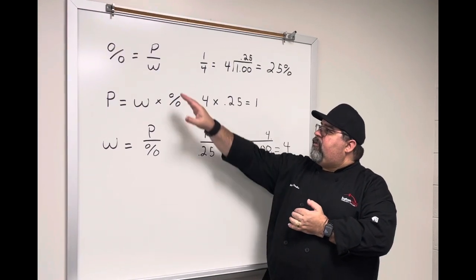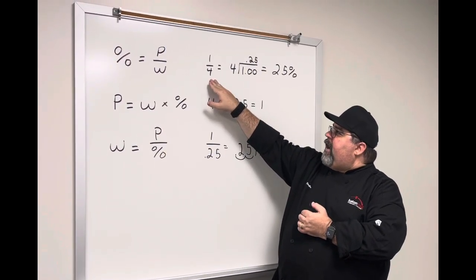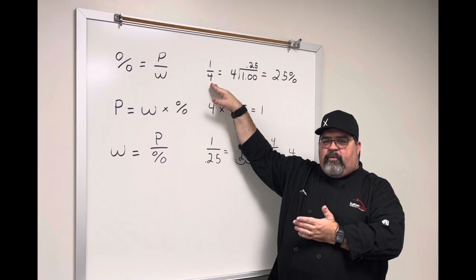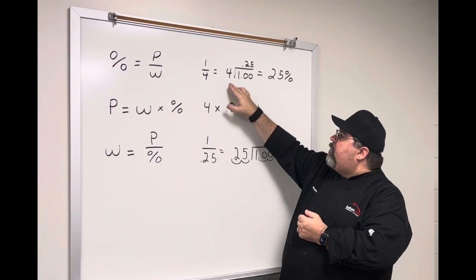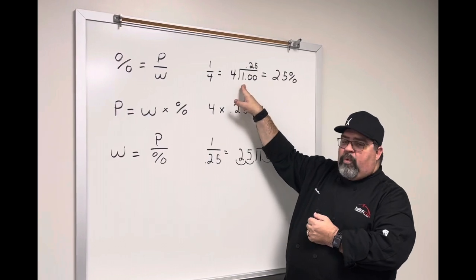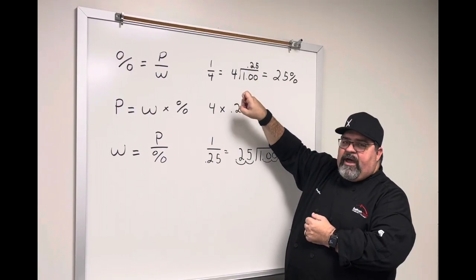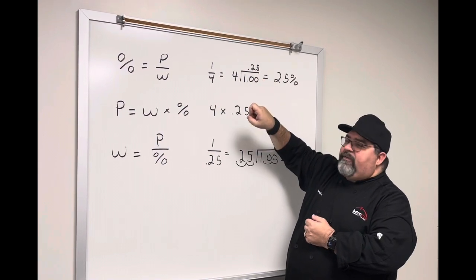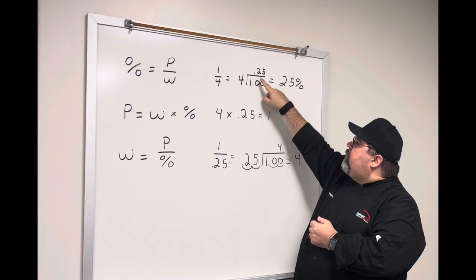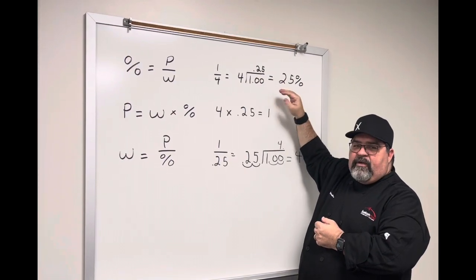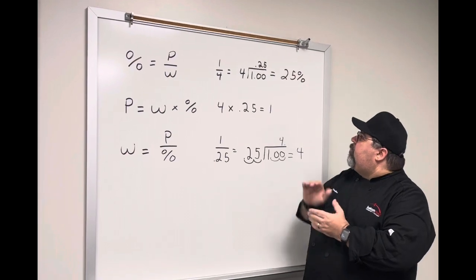First, we have part over whole equals percent. I'm using the fraction 1/4, one fourth. If we do this as a math problem, we have 4 going into 1. We put a decimal there, bring that decimal to the top, and we have .25. We move our decimal over two places, which gives us 25%.